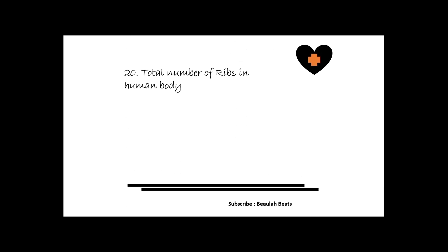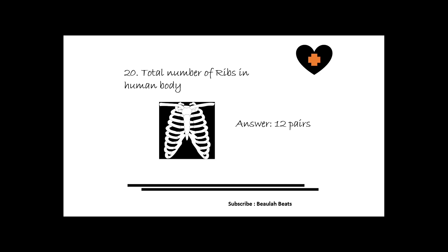The last question is: what is the total number of ribs in the human body? The answer is 12 pairs, symmetrically paired on the right and left side — totally 24 ribs. The first seven pairs are often labeled as true ribs; these bones are connected to the costal cartilage. The remaining five pairs are false ribs.